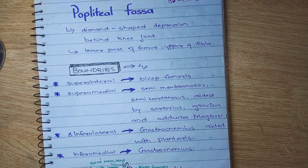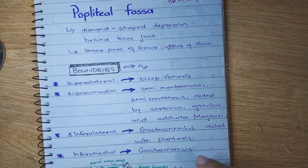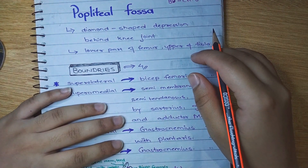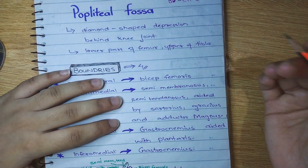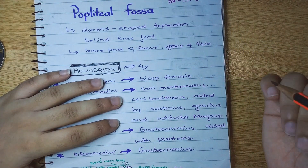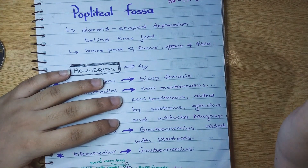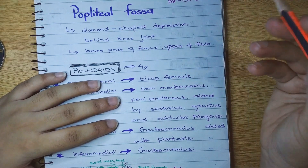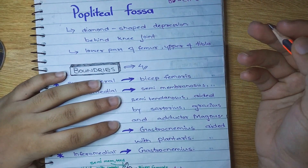Hello guys, I am Mustafa Priyaz. Welcome to my channel Medical School Learning with another video. Today we are going to talk about the popliteal fossa. The popliteal fossa is located on the lower part of the femur and the tibia.